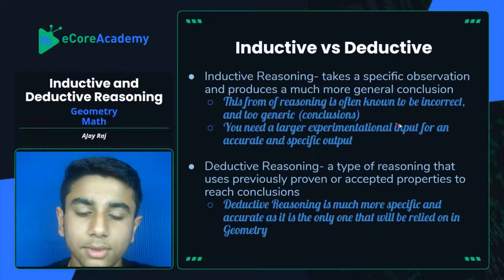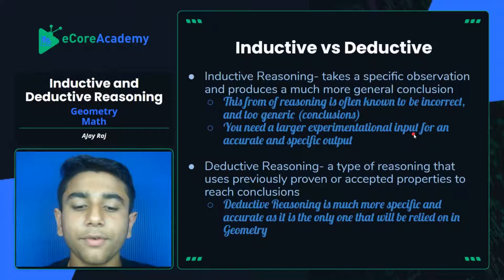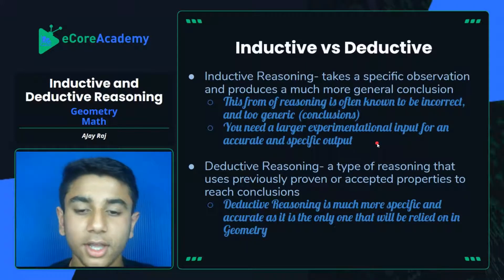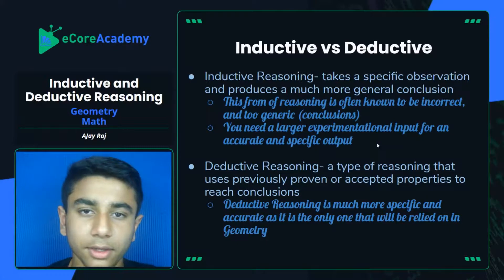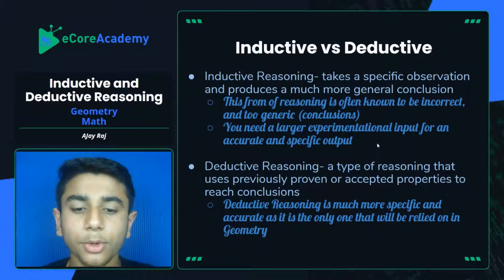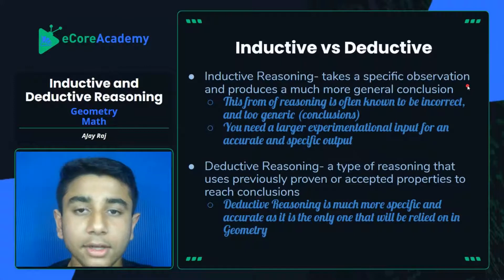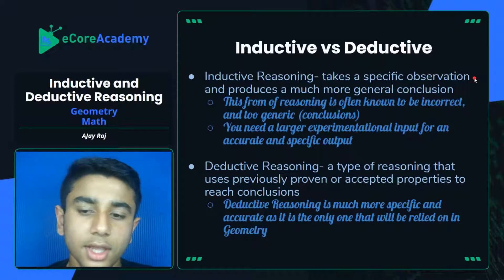You can tell that this form of reasoning is often known to be incorrect and too generic when it comes to its conclusions. You need a larger experimental input for an accurate and specific output. For example, say you're given the task of discovering whether all frogs have four legs. We know most likely that not all frogs have four legs — they could have an extra leg due to a birth defect, or could have lost a leg due to some external force. If we take a specific observation and look at only one single frog and observe that it has four full proper legs...